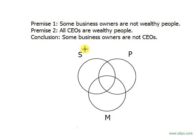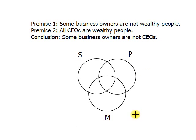In order to do the diagram, we have to know the following. First, we have to know what the premises are, which are already labeled here for us. We have to know what the conclusion is, which is also here. Next, we have to know what our terms are: what is our S-term, what's our P-term, and what's our M-term?